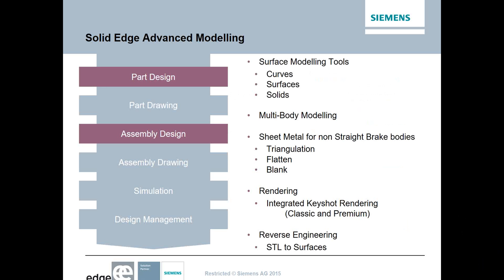This is the agenda for today. We'll look at surface modeling tools - how we generate curves, from curves we generate surfaces, and from surfaces we stitch them together into solids. We'll also look at multi-body modeling tools and how you can use those to generate a full assembly. Then we'll move on to sheet metal for non-straight brake bodies, such as chined boat hulls, an auger, or a square-to-round transition.